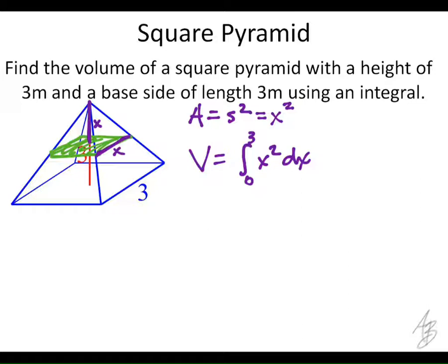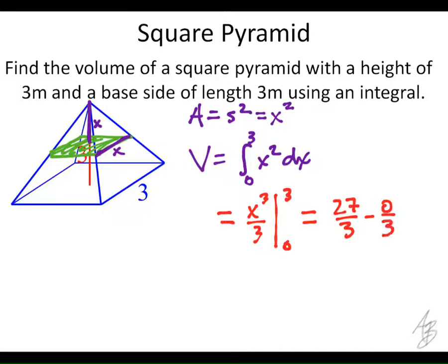Let's go ahead and solve this integral analytically. We've got X to the third over 3, evaluated from 0 to 3. That gives us 27 over 3 minus 0 over 3, which is 9.